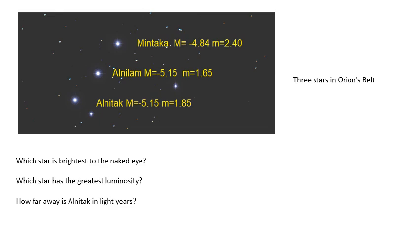Here's another example for you to have a go at. These are three stars in Orion's belt, which is obviously in Orion. Alnitak, Alnilam and Mintaka. I've given you their absolute magnitudes. I've also given you their apparent magnitudes. First of all, which star is brightest to the naked eye? Which star has the greatest luminosity? How far away is Alnitak in light years?